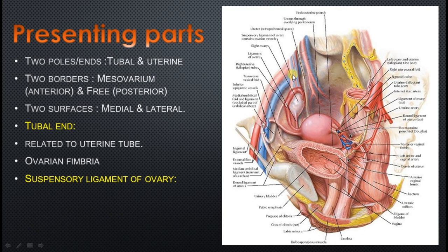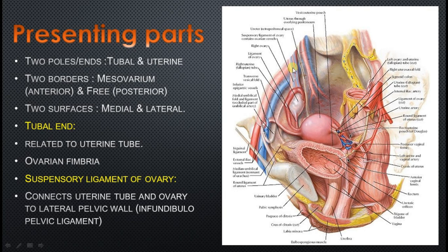The tubal end is also related to the suspensory ligament of the ovary, which connects the upper end of the ovary and uterine tube to the lateral pelvic wall. It is also called the infundibulopelvic ligament. It contains the ovarian arteries and a plexus of veins, running through this suspensory ligament of the ovary, which transmits the ovarian vessels and the pampiniform plexus of veins.